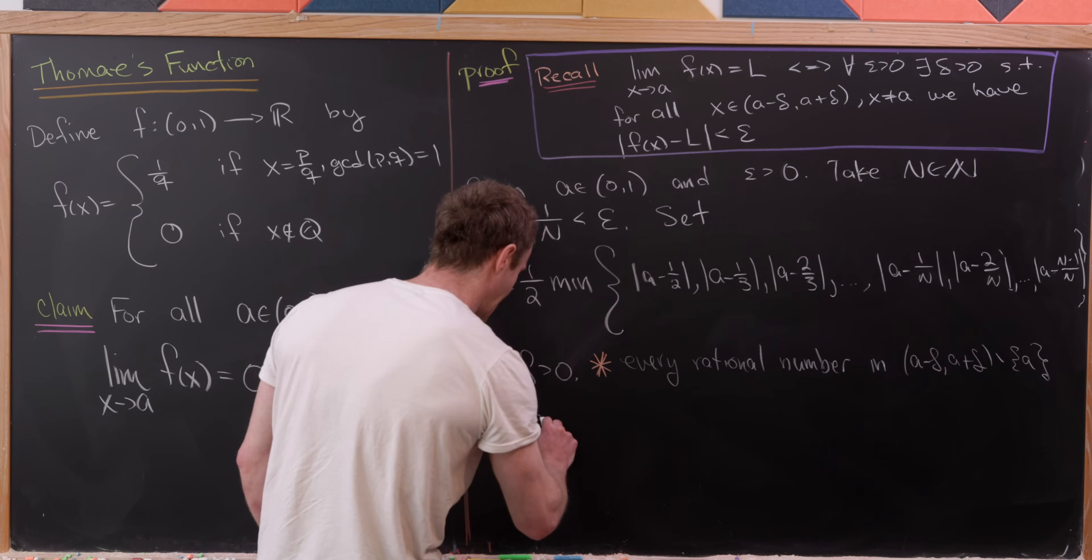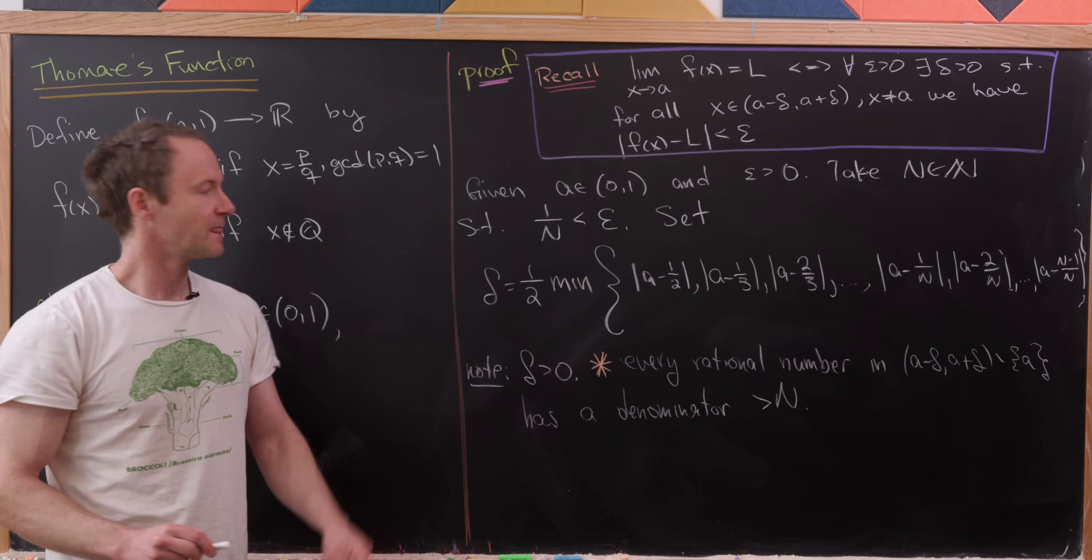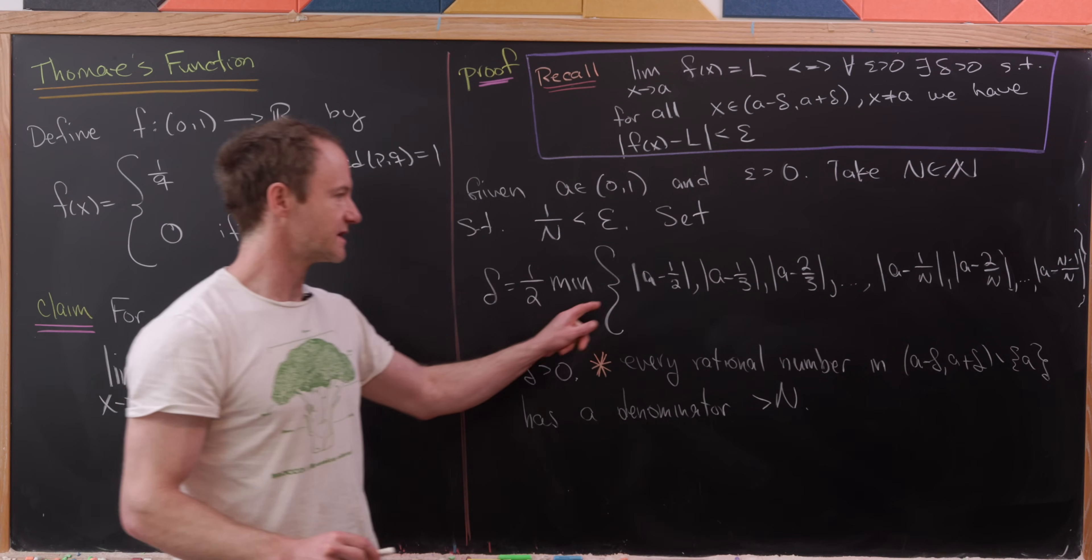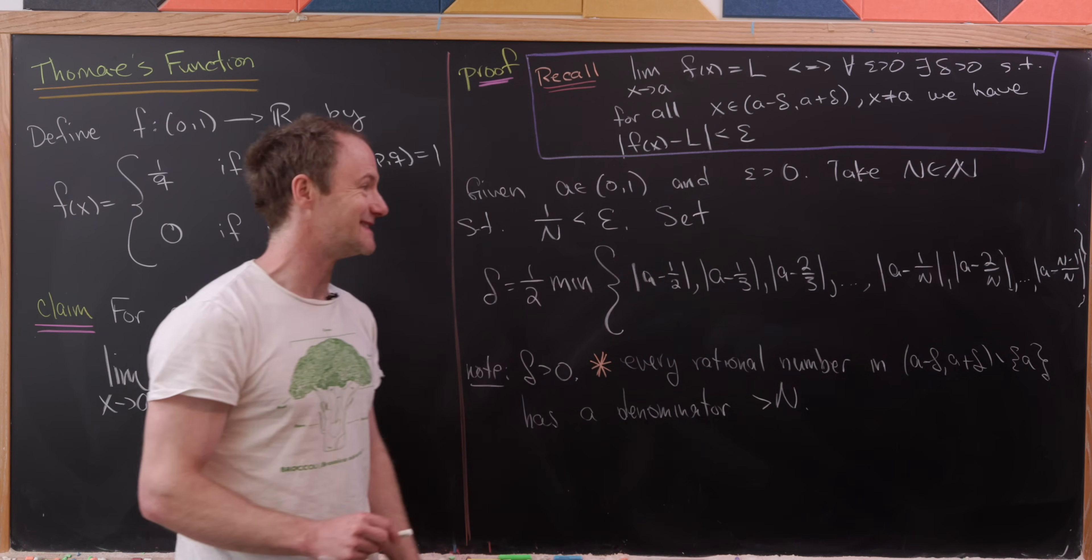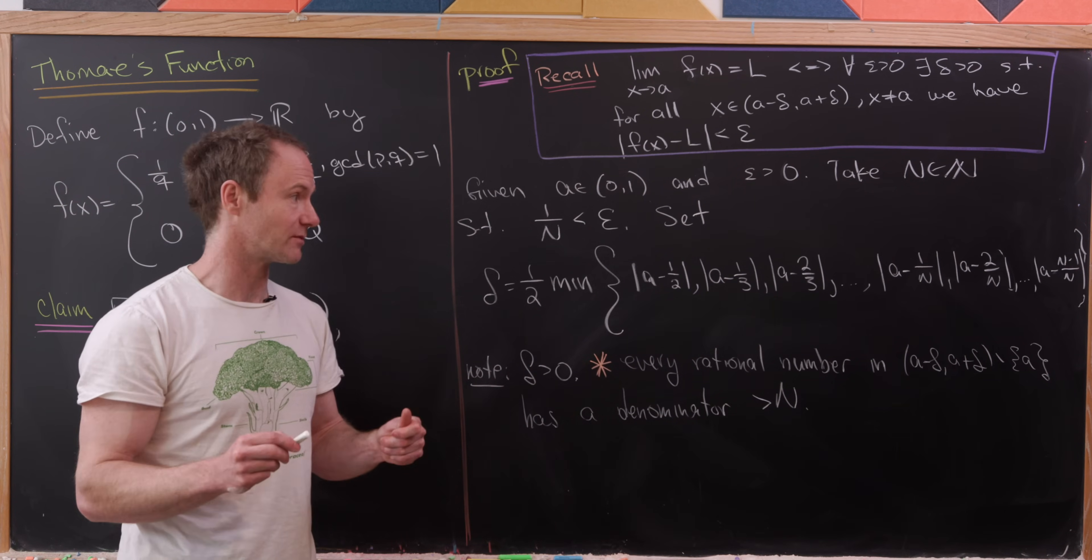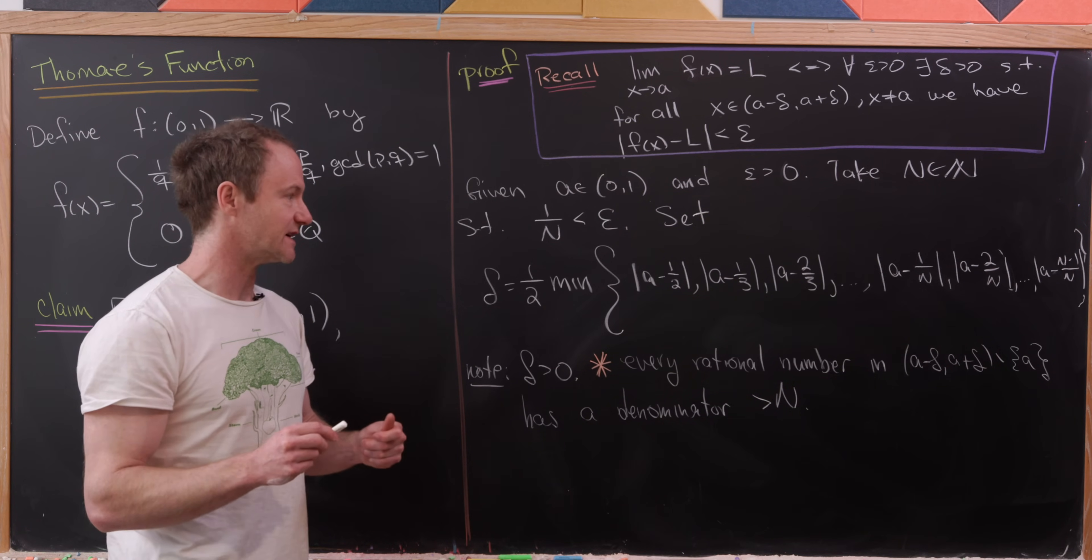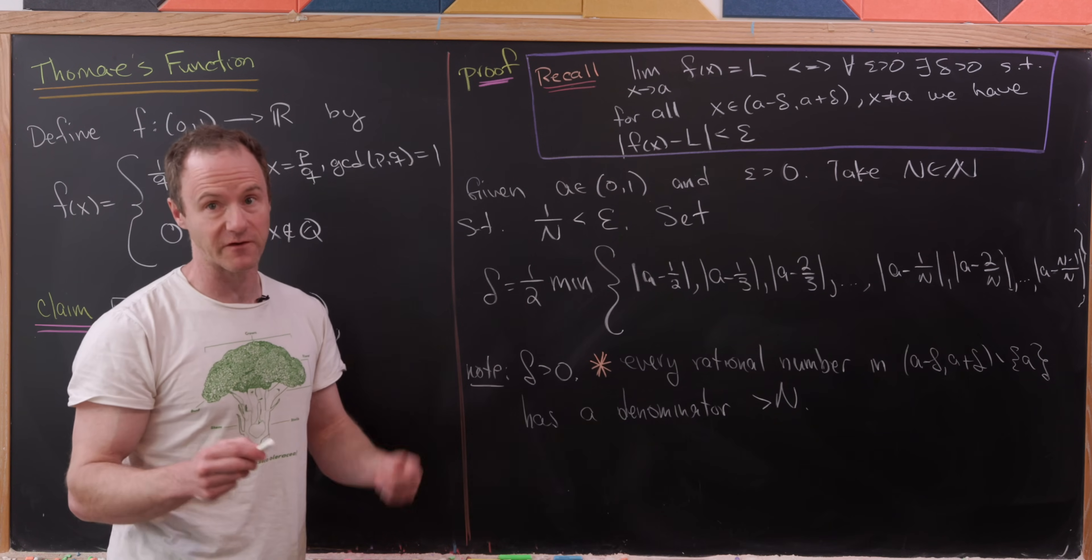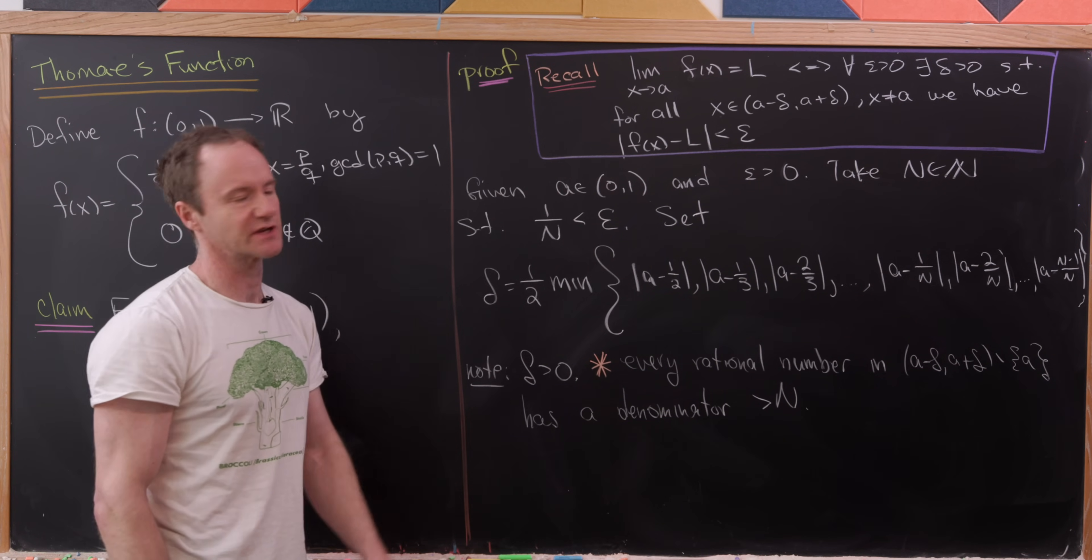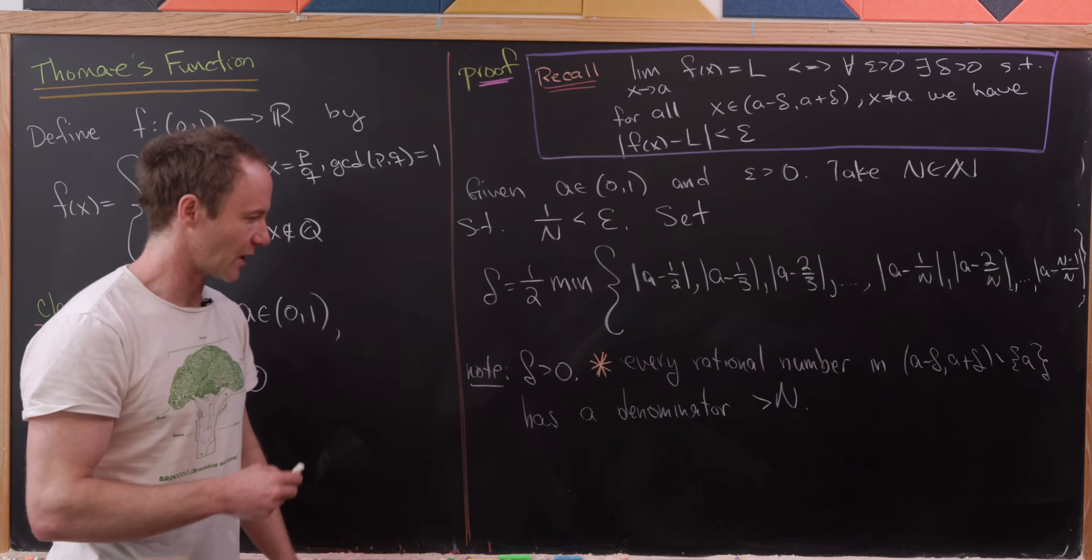And that's because well, notice that all of these are the distances of A to every rational number whose denominator is less than or equal to N. So we're bounding A away from all of these rational numbers, unless of course, A is one of those, and then we delete it out of there.